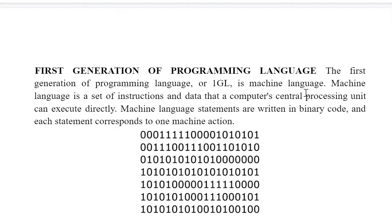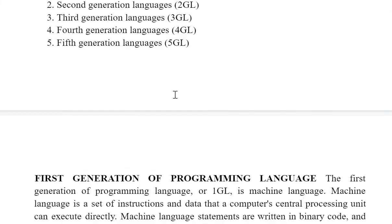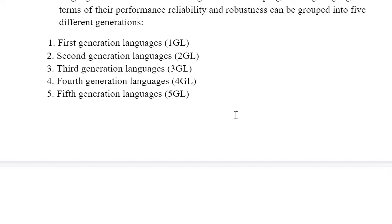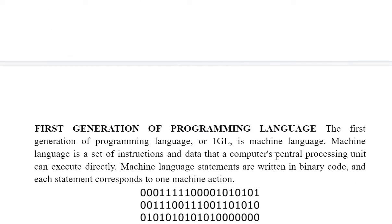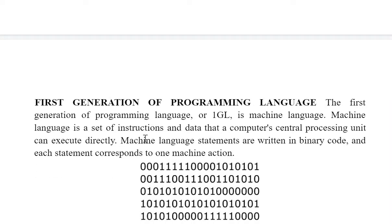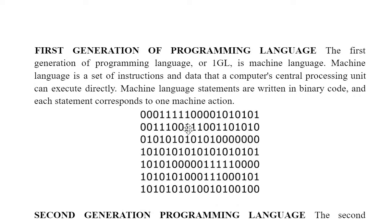Coming to the first generation of programming language — 1GL. If you go from down to up, it is more machine friendly. First generation language is also called machine language, because these languages can be easily understood by machine. Machine language is a set of instructions and data that a computer's central processing unit can execute directly. If your code is written in first generation language or machine language, there is no need to convert it — the machine directly understands this language. The example of machine language is binary code, in the form of zeros and ones.